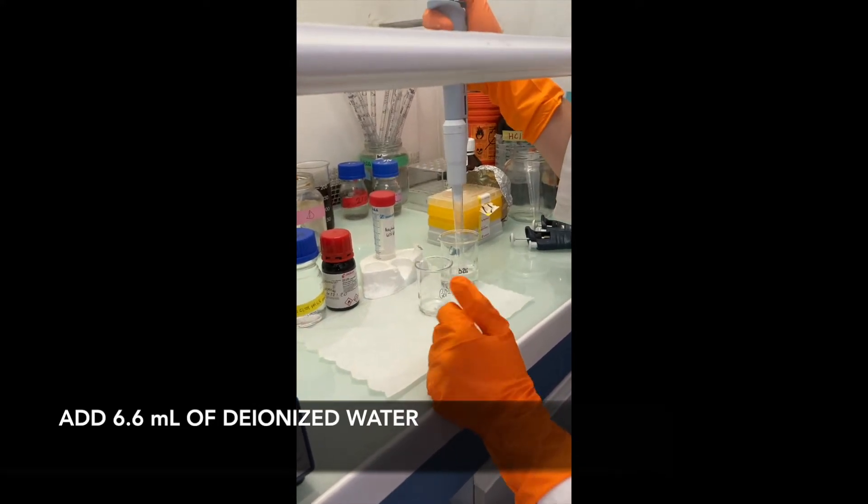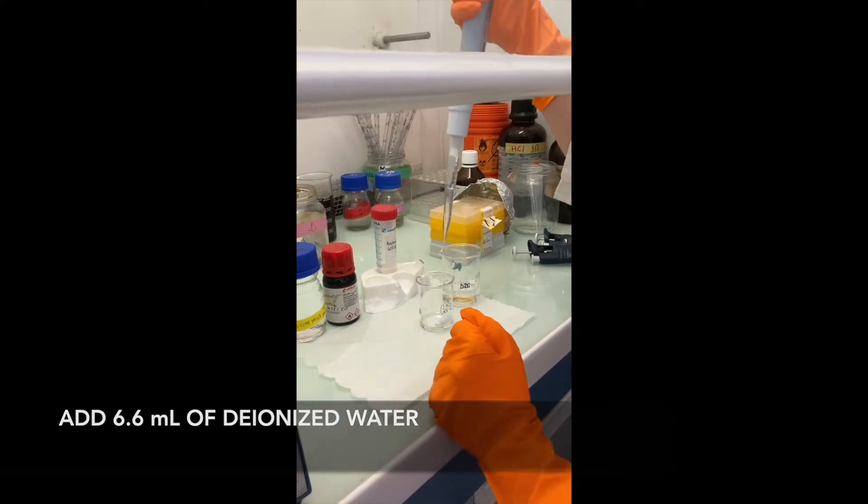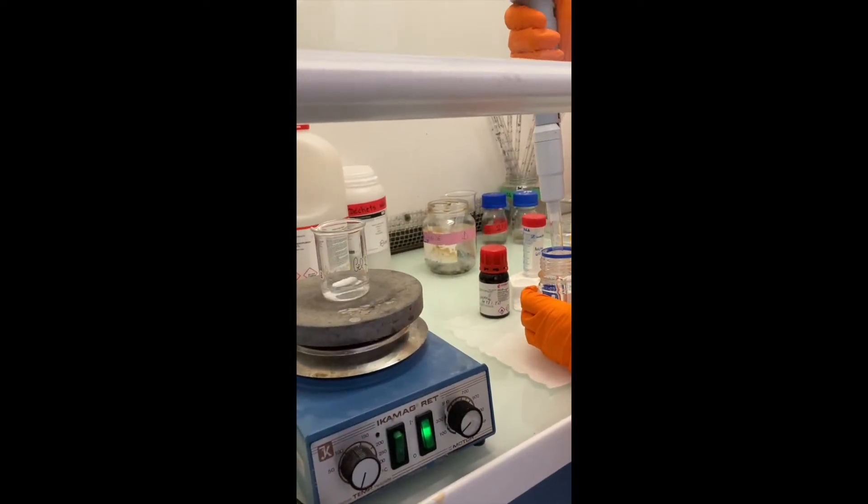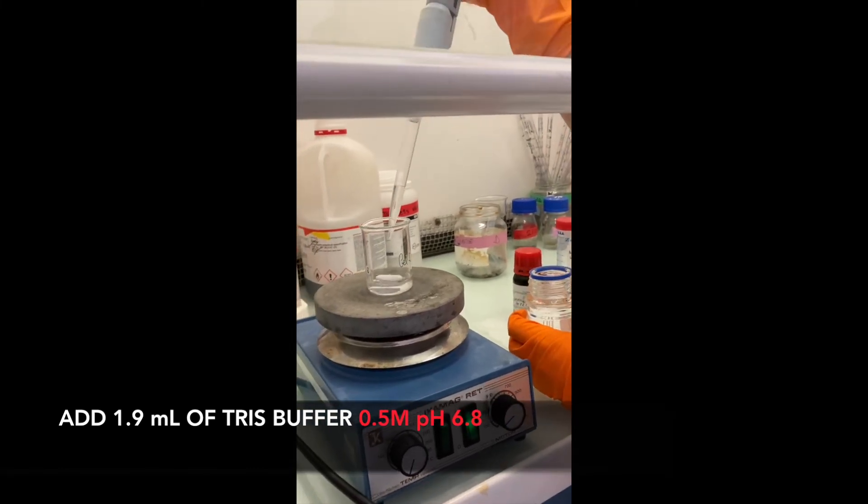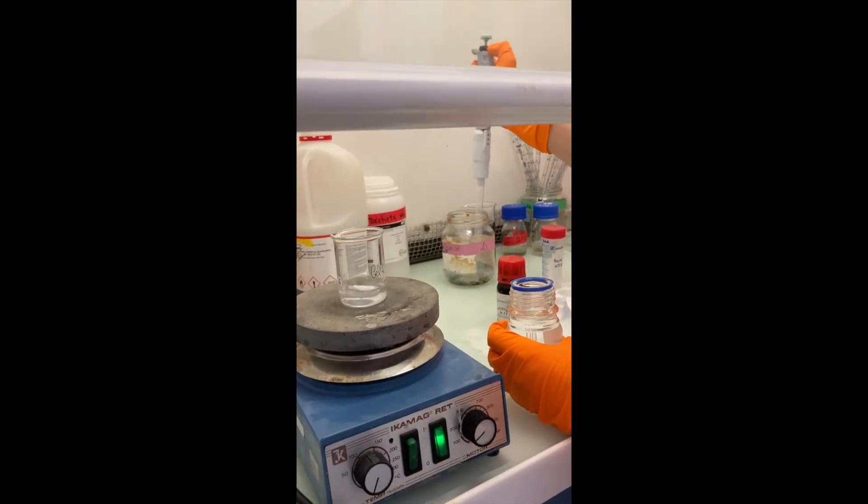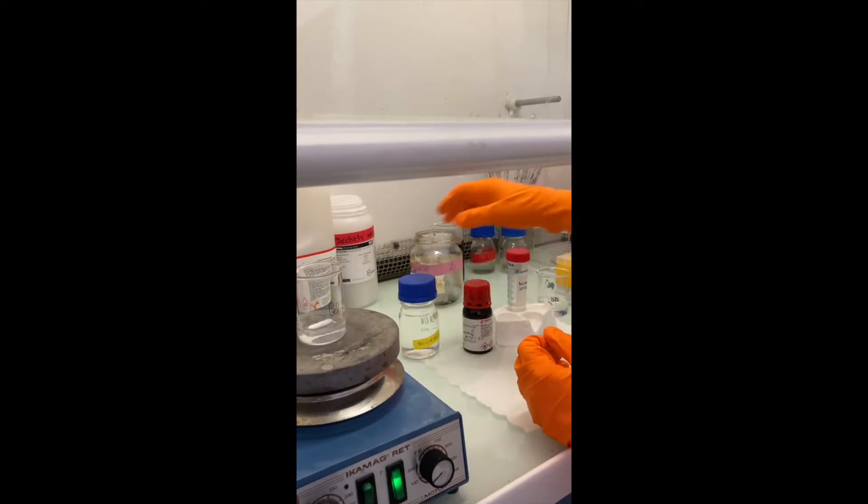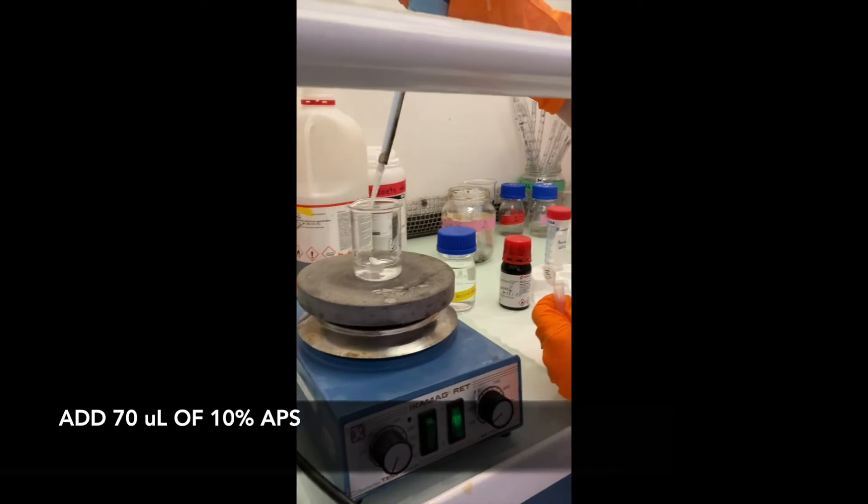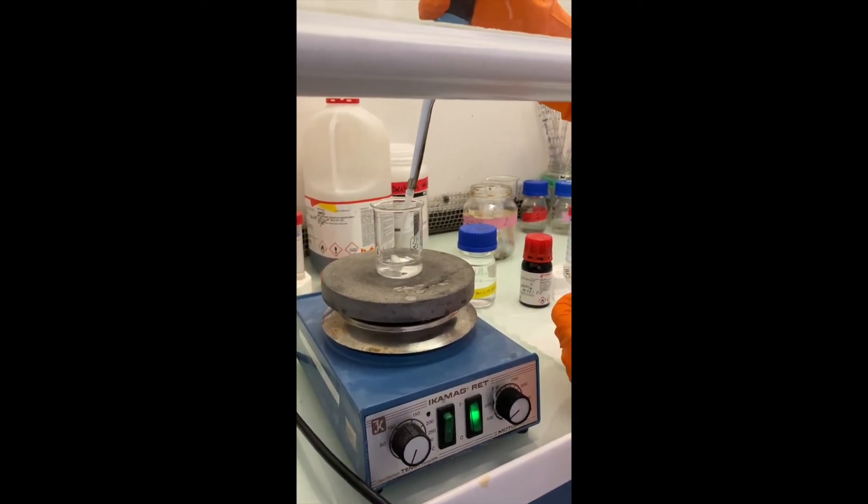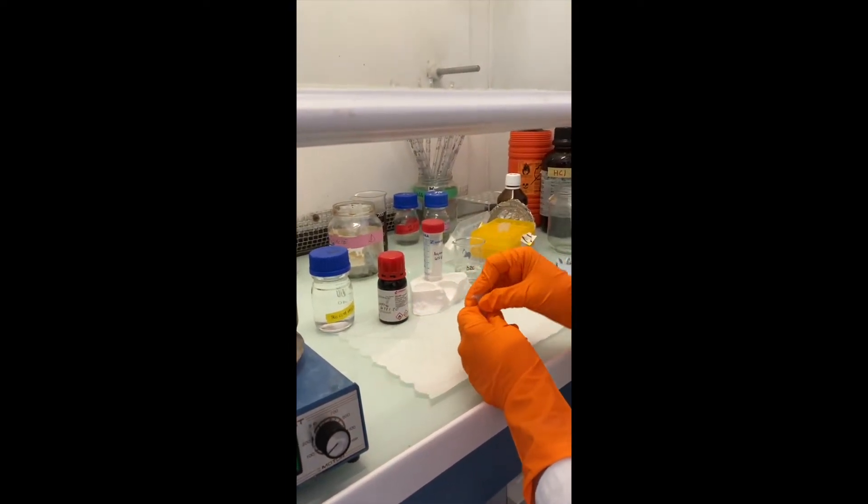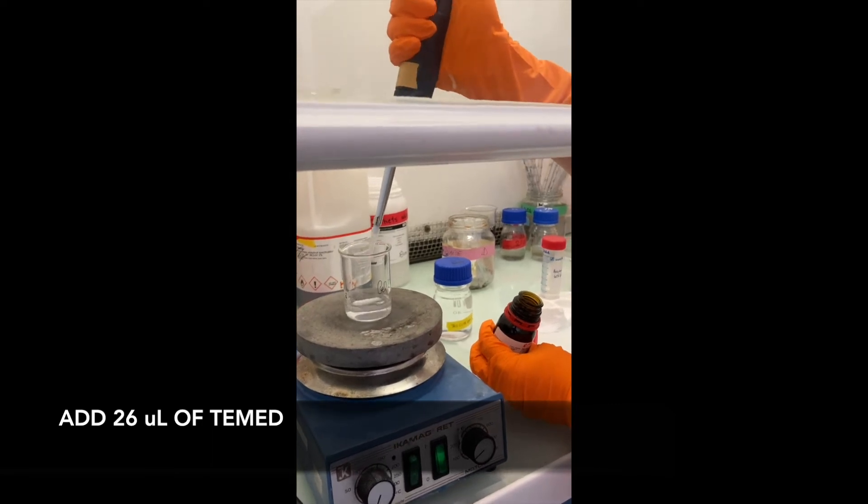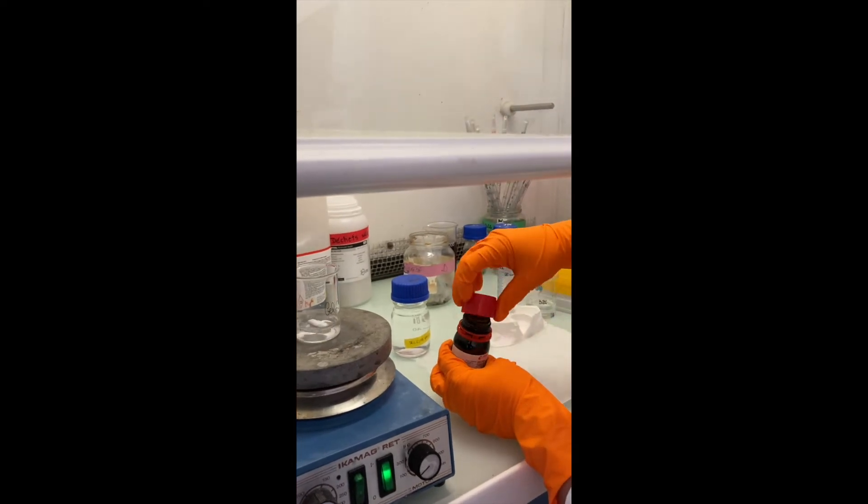Add 6.6 milliliter of water. Then add 1.9 milliliter of tris buffer pH 6.8, 0.5 molar. Add 70 microliters of APS. Add 26 microliters of TEMED.